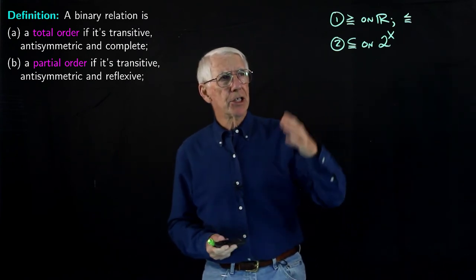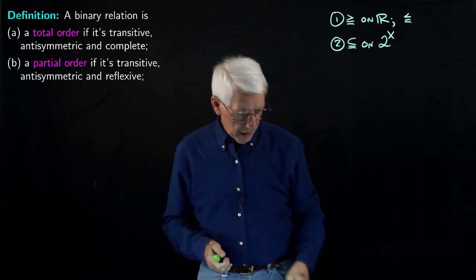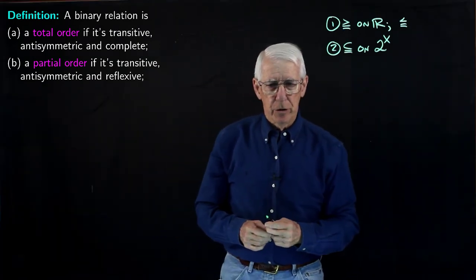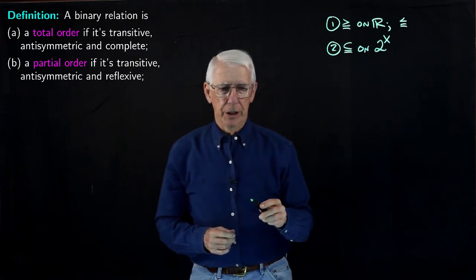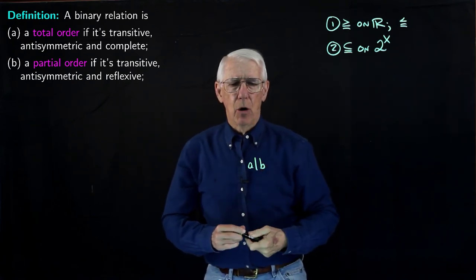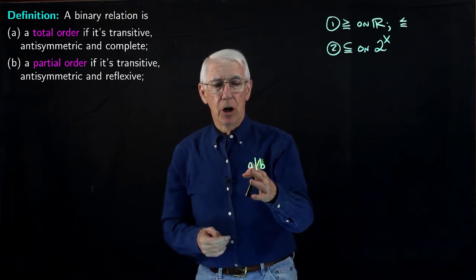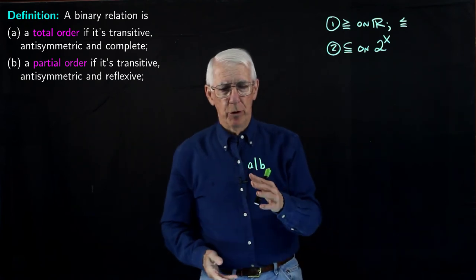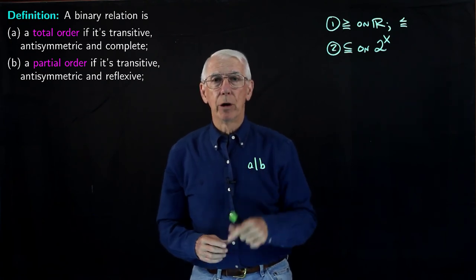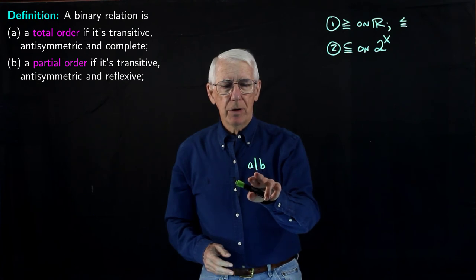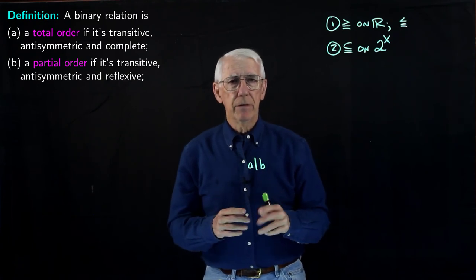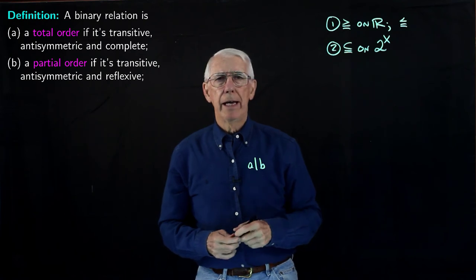What are some other examples of partial orders? One is the divisor relation. We say A divides B, or A is a divisor of B. This is an ordering relation on the natural numbers. For example: 9 divides 18, 6 divides 18, 8 divides 24. This relation is transitive, antisymmetric, and reflexive, as is easy to check. So that's another example of a partial order.